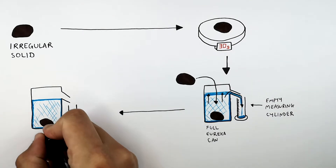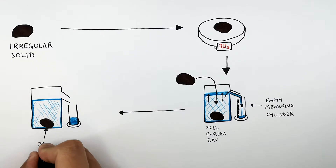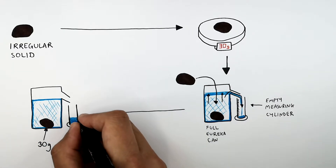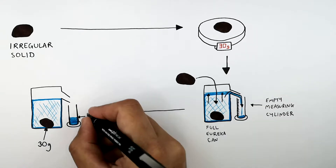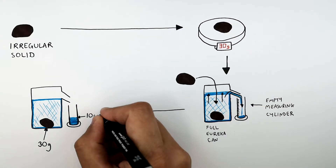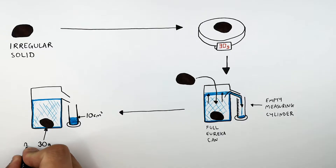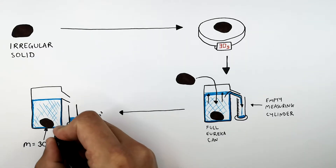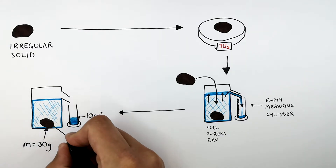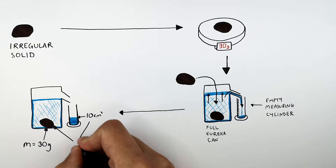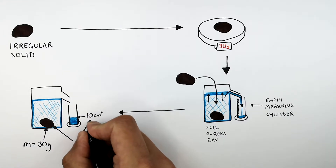So remember, we've got the mass of the irregular shaped solid which is 30 grams. And the measuring cylinder filled up with 10 centimetres cubed of water. So the mass of the irregular shaped solid was 30 grams, and 10 centimetres cubed of water was displaced from the full Eureka can into the measuring cylinder.